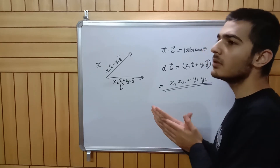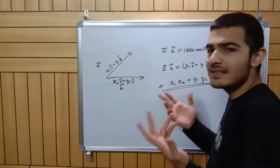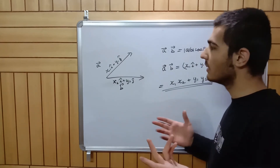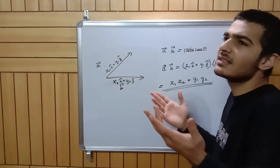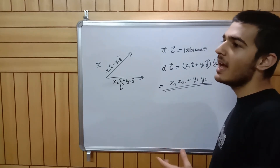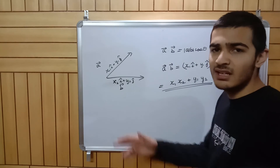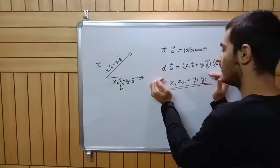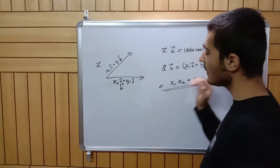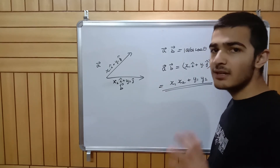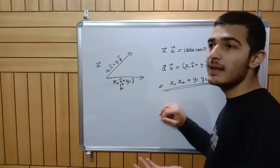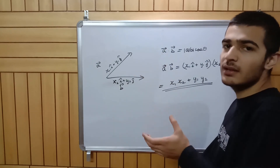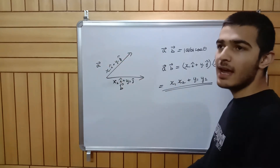So is work a scalar or a vector? The direction of work doesn't really make sense — you apply a force in one direction but get displacement in another, so what is the direction of work? It makes no sense. After all, it is energy that really matters. Work is a scalar — it has a magnitude but no direction. That's why we also call the dot product the scalar product: it's a scalar multiplication between two vectors.